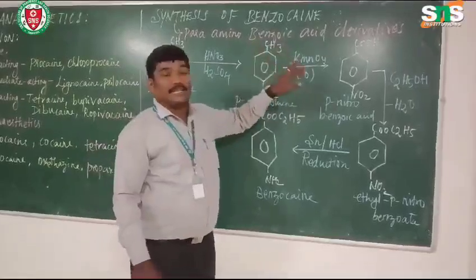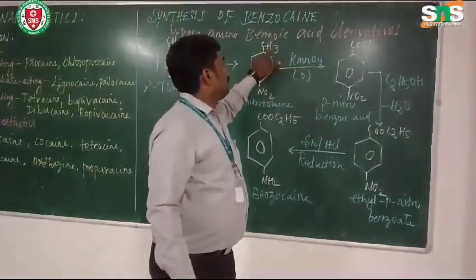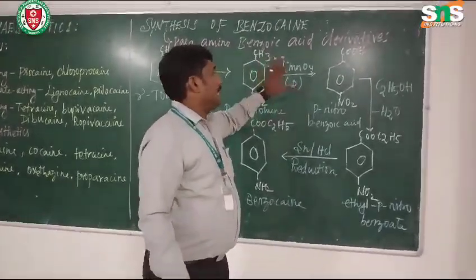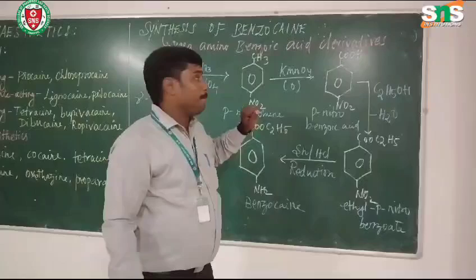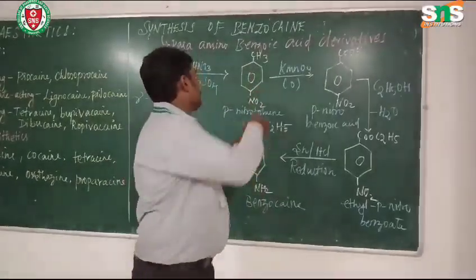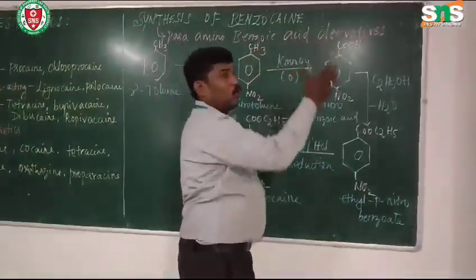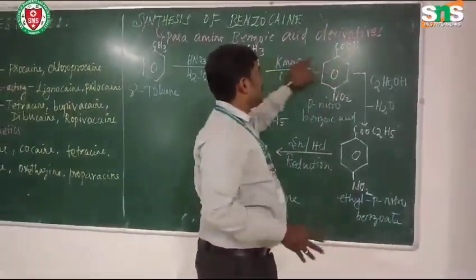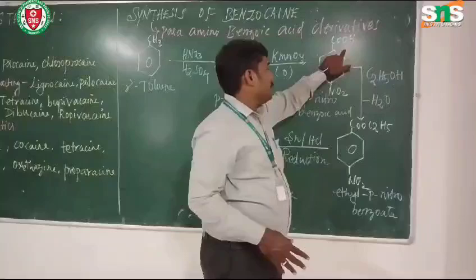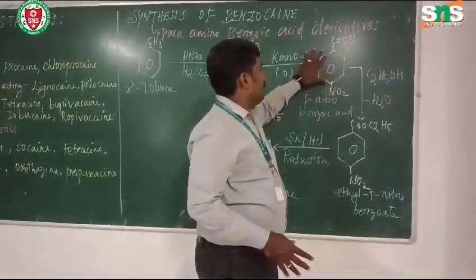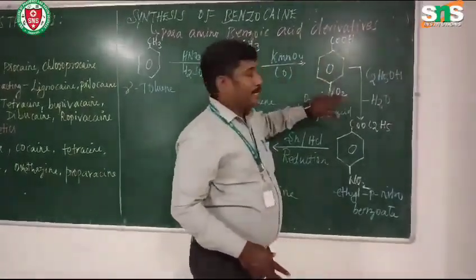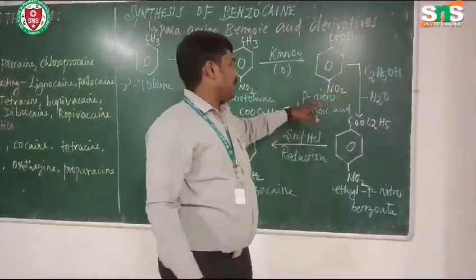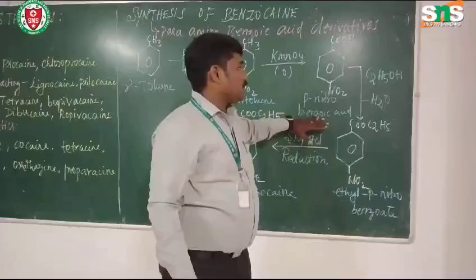The next step is oxidation. In para-nitrotoluene, the CH3 group is present. This oxidation is carried out in the presence of potassium permanganate. The CH3 methyl group will be converted into a carboxylic acid group — CH3 is converted to COOH. This gives para-nitrobenzoic acid.